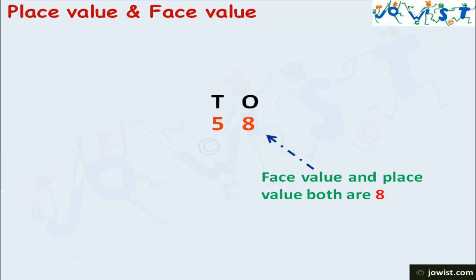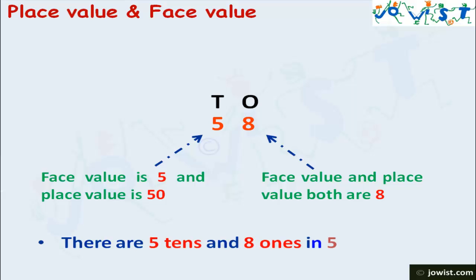But, the face value of 5 is 5 and the place value is 50 because it is in the 10's place. There are 5 10's and 8 1's in number 58.